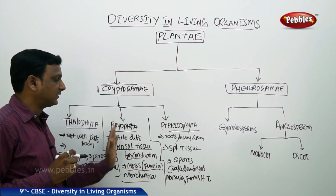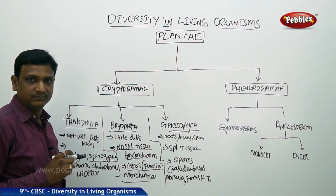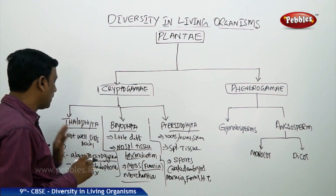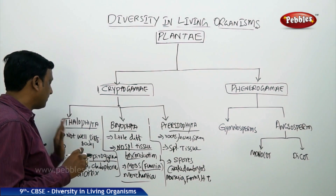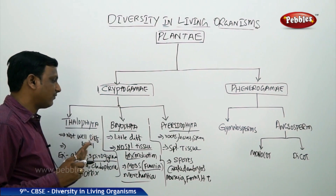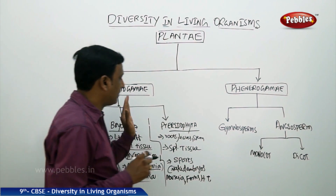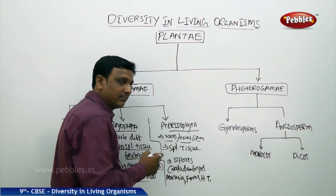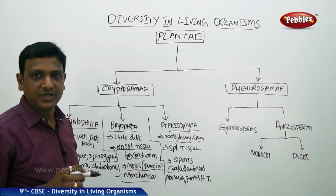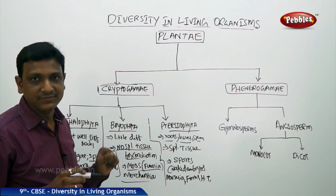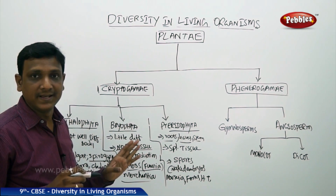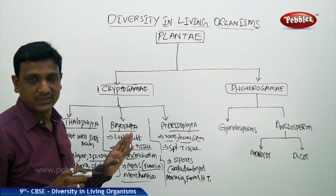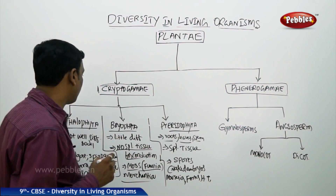The third division is Pteridophyta. From Thallophyta to Bryophyta we found some development, and now in Pteridophyta there is further development. Here you can see roots, leaves, and stem — the body is differentiated into stem, root, and leaves. They also have special tissues for conduction of water, which is the improvement from Thallophyta.